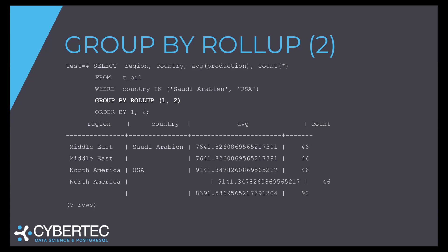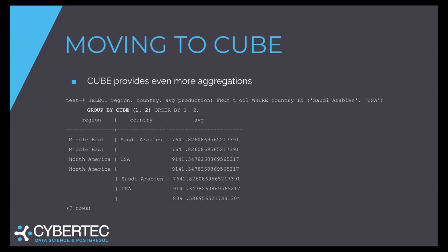But there is also Cube. To sum it up in one word: it's all the combinations. So it gives you Middle East + Saudi Arabia, only Middle East, North America + USA, only North America, only Saudi Arabia, only the United States, and the bottom line for everything. Postgres provides all possible aggregations: A+B, only A, only B, and the whole thing. It's like running multiple aggregations at a time with just one query. That's what Cube does.